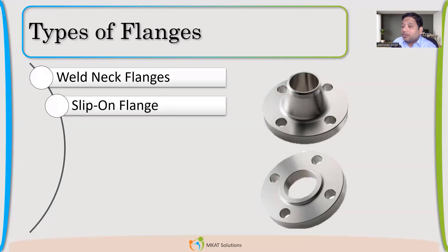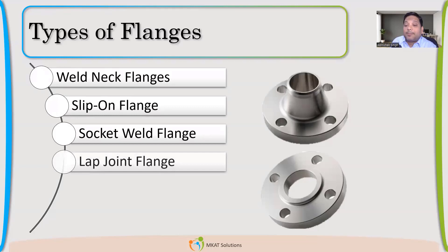Then there are slip-on. They can just slip on the pipe or the pressure vessel, so slip-on type flange. Socket welded. For quick connection, we use socket weld flanges also for very low pressure applications.